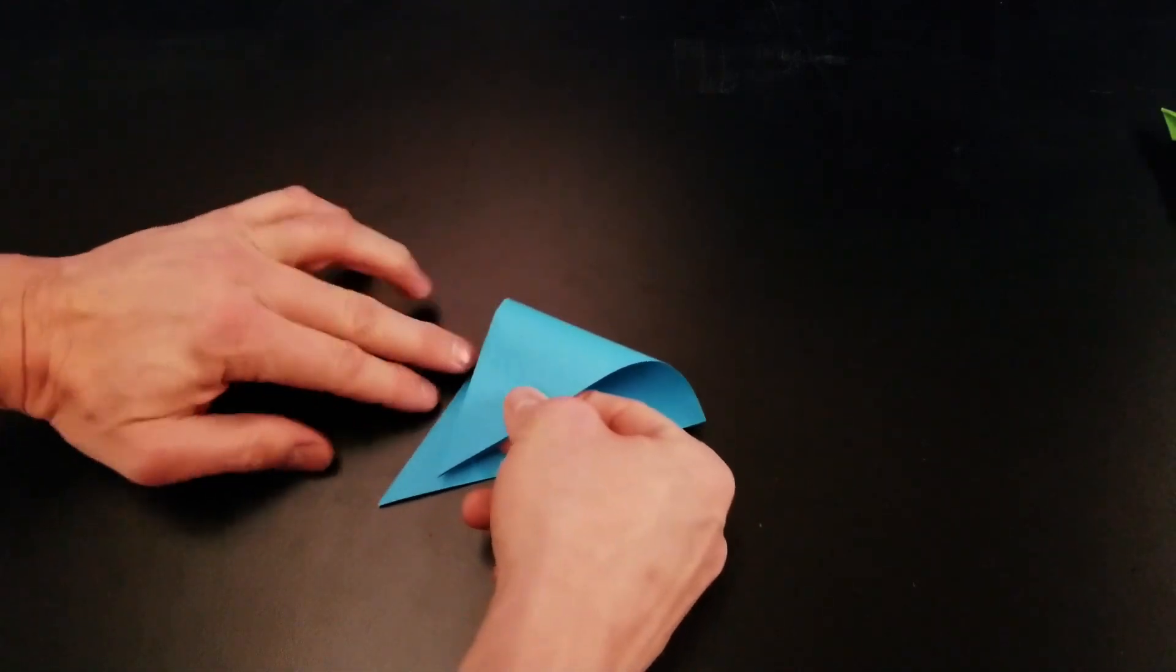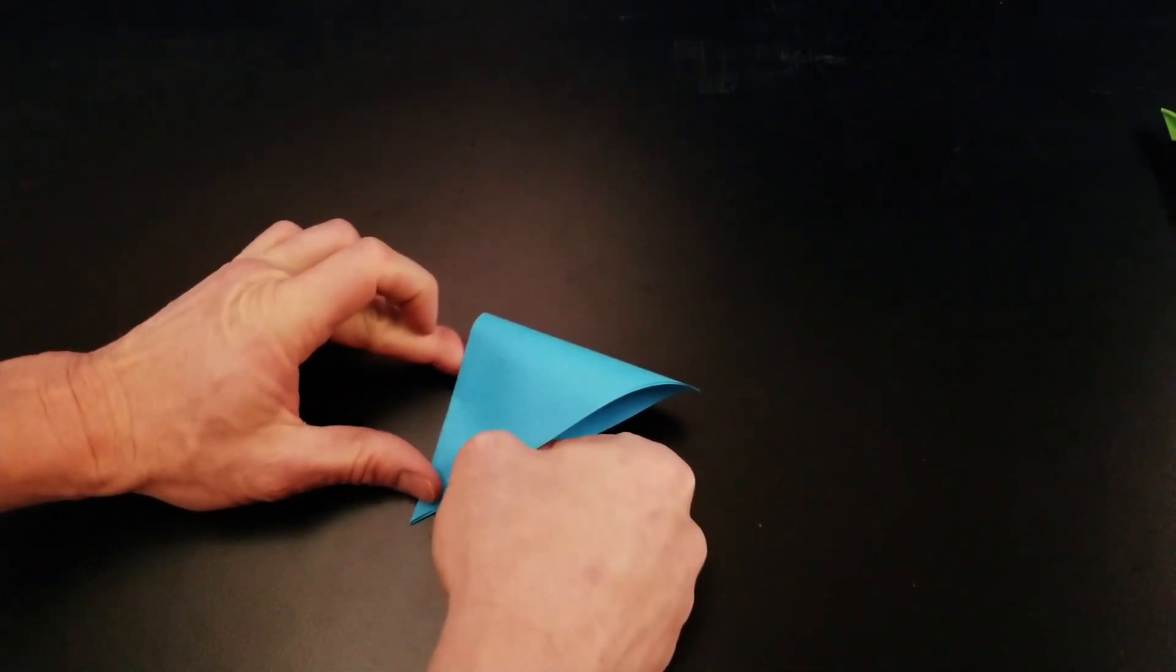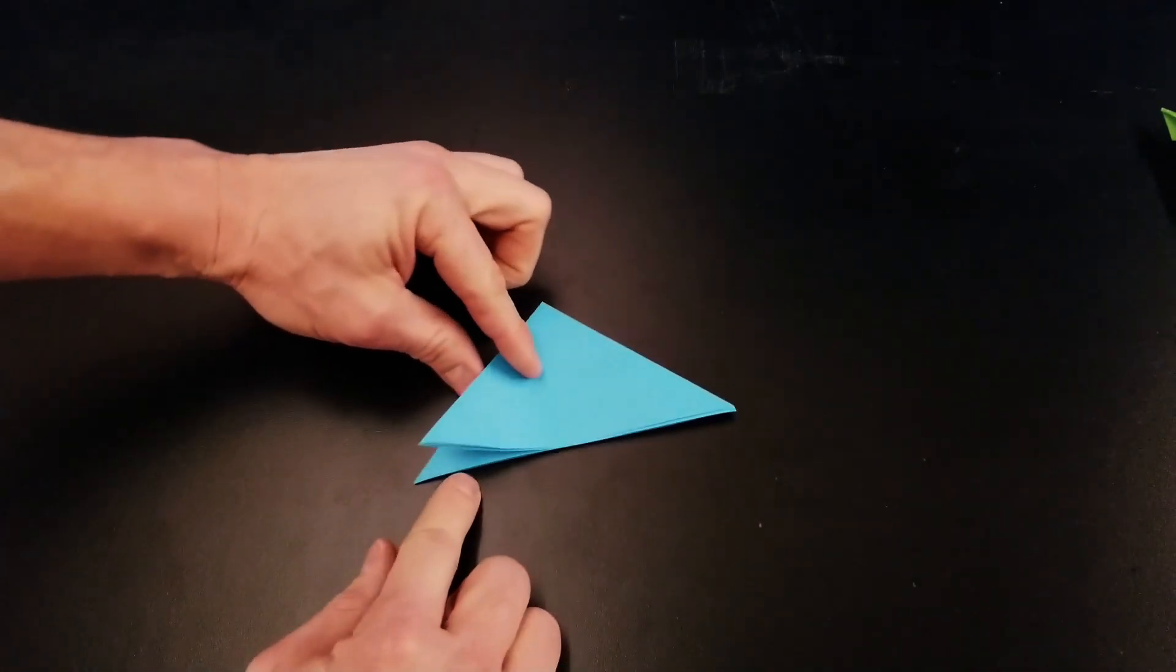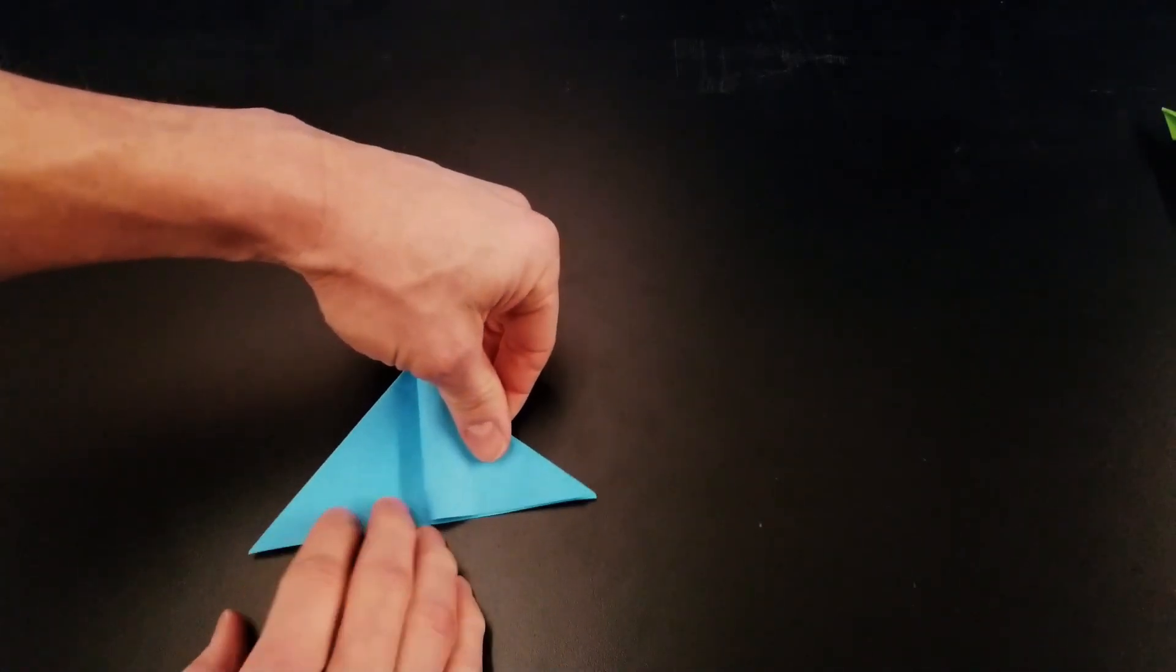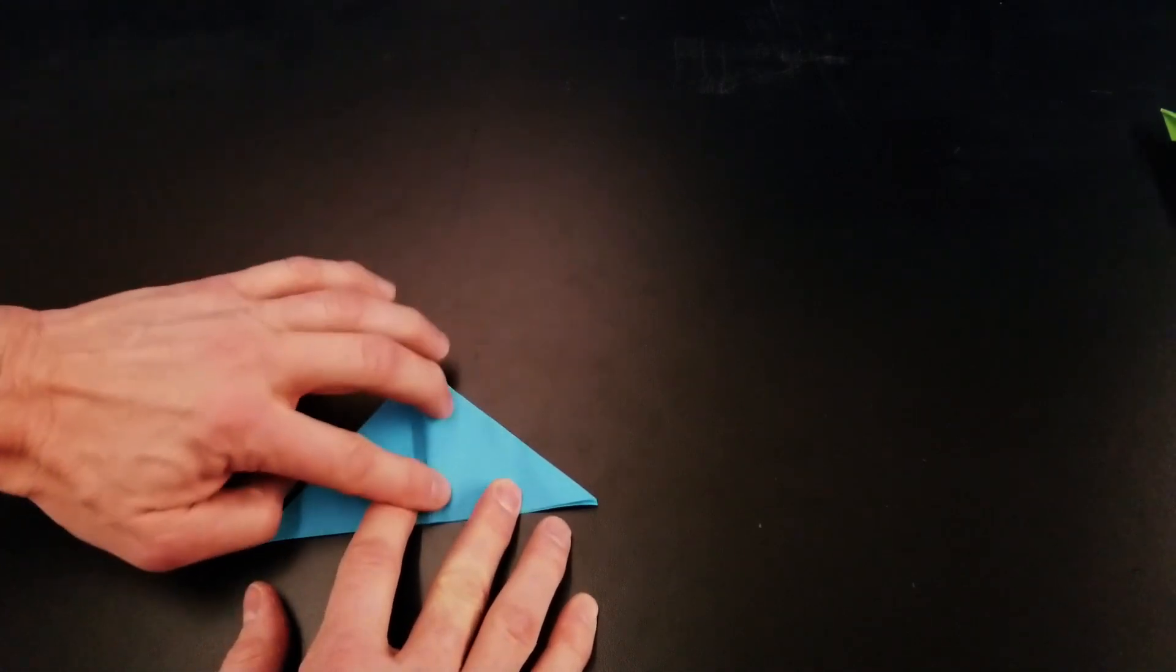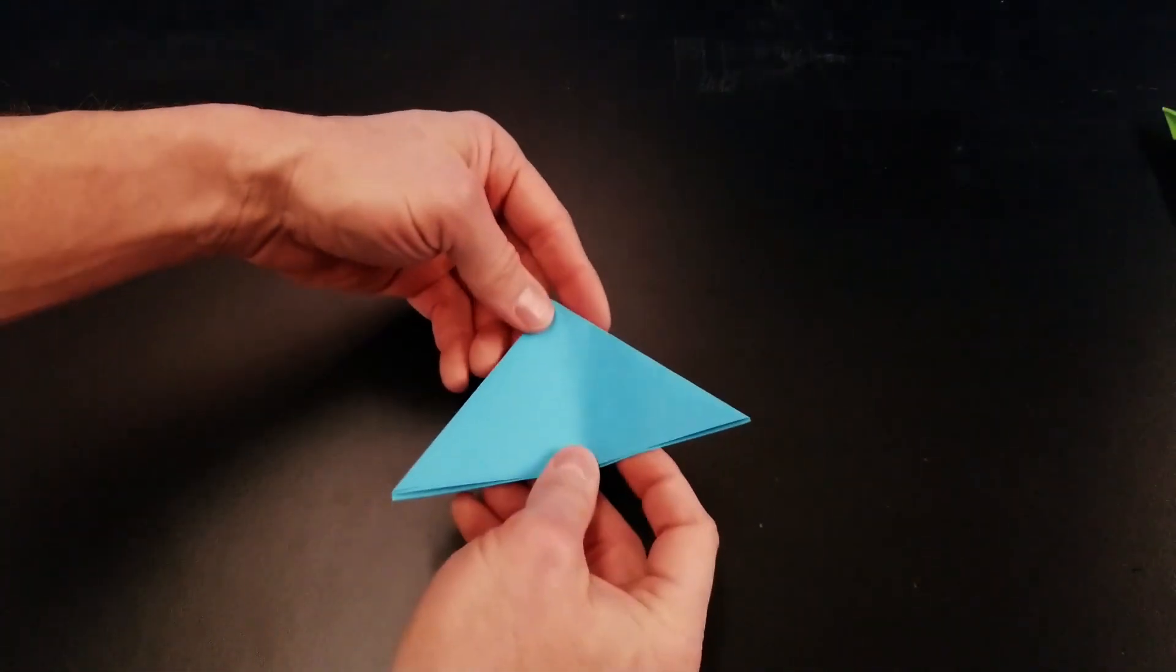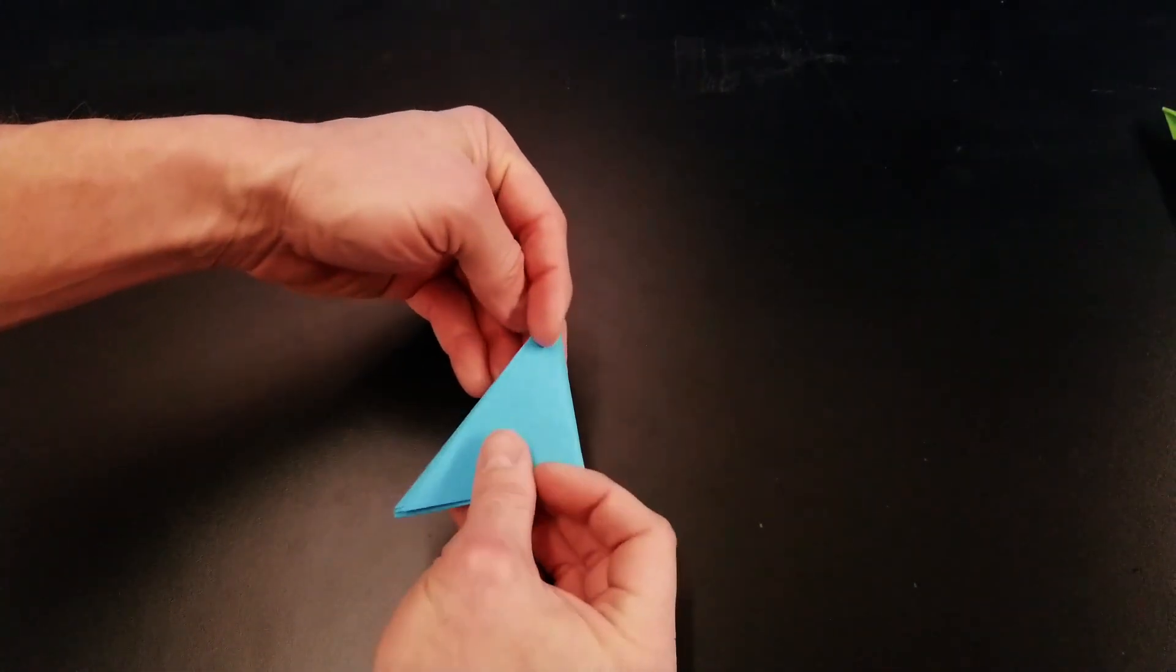I'll lift this up, fold it in half again, and crease that. I will lift this upper flap, bring it across, and crease that down. Then I will flip it over and then fold this flap over.